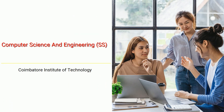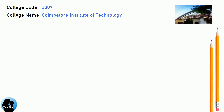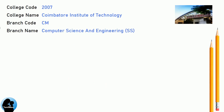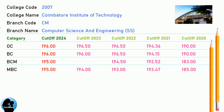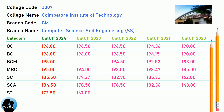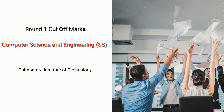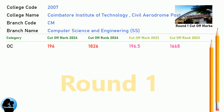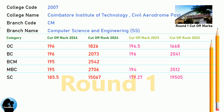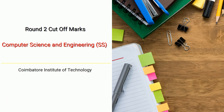DNA Cut-Off for Coimbatore Institute of Technology in Computer Science and Engineering. DNA Round 2 Cut-Off for Coimbatore Institute of Technology in Computer Science and Engineering.